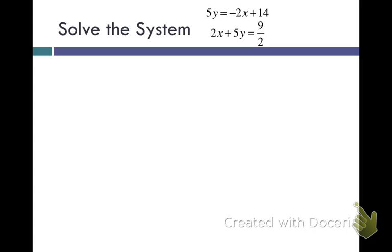An example of this would be this system of equations: 5y equals negative 2x plus 14 and 2x plus 5y equals 9 halves. When I am solving a system, I have to rewrite one of the equations to solve for a variable. Since the top equation, all I have to do is divide everything by 5 to get y by itself, I think I am going to solve the top equation for y.